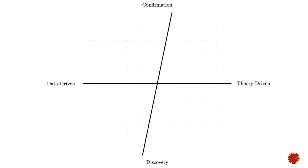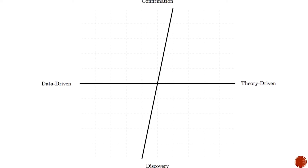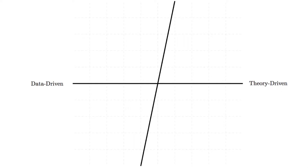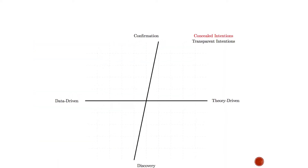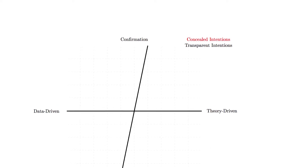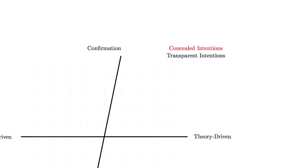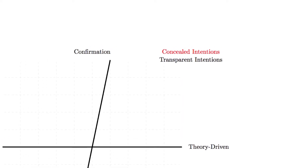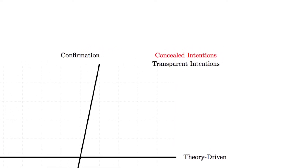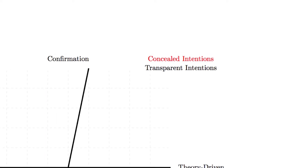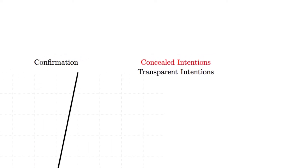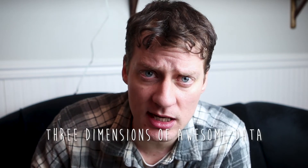Confirmation means you specify everything in advance; discovery doesn't have that restriction. The second dimension is theory-driven versus data-driven: sometimes theory guides your research questions, other times the data tells you what to do. The third dimension uses black or red labels — red means the analyst's intentions are concealed or deceptive, while black means they are transparent.